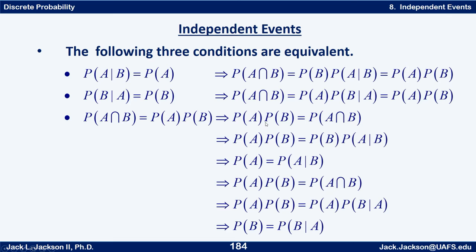Starting with P(A) · P(B) = P(A∩B), suppose that's true. We know in general that P(A∩B) = P(B) · P(A|B). Dividing both sides by P(B), we get P(A) = P(A|B), so the third condition implies the first. Similarly, replacing P(A∩B) with P(A) · P(B|A) and dividing both sides by P(A), we get P(B) = P(B|A), showing the third condition implies the second. Using the definition of conditional probability, we've proved that any one of these conditions implies the other two.